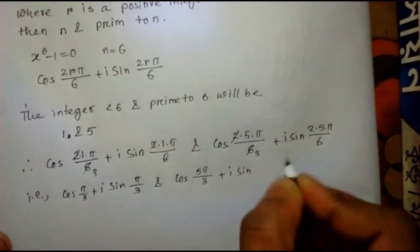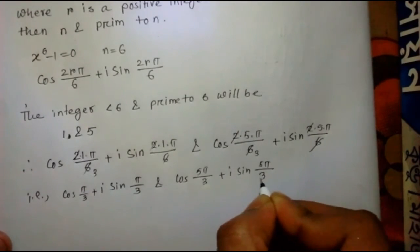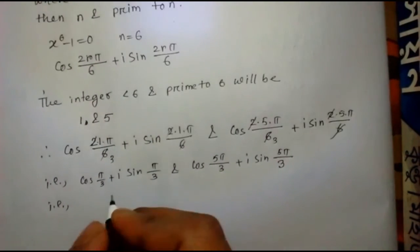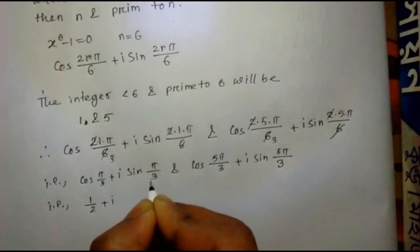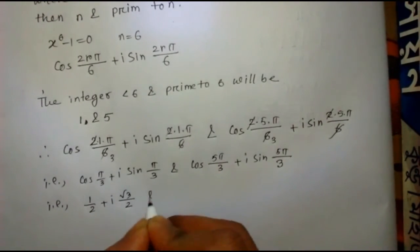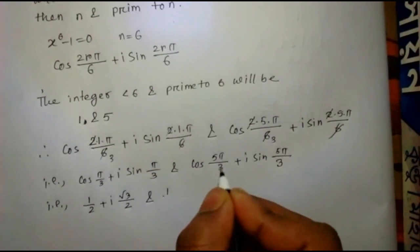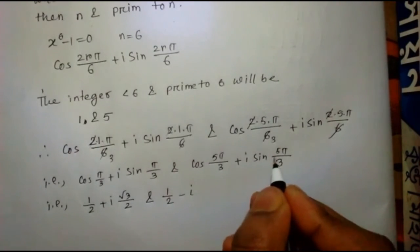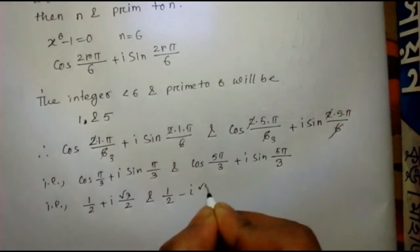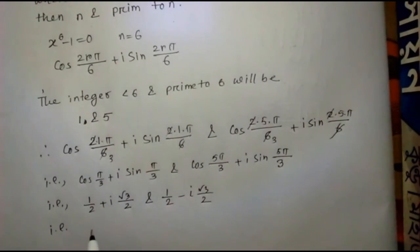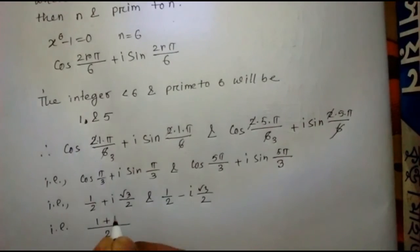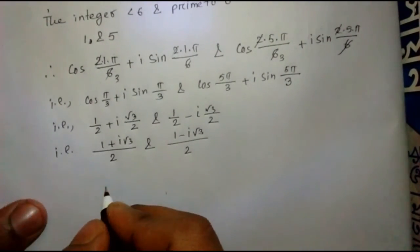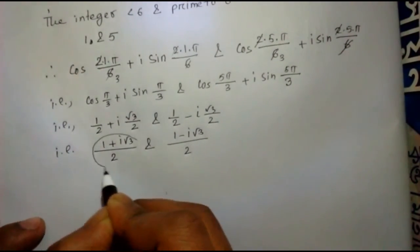Now, cos(5π/3) equals 1/2 and sin(5π/3) equals −√3/2, giving the root (1/2) − i(√3/2), which equals (1 − i√3)/2. And cos(5π/6) plus i·sin(5π/6) gives (1 + i√3)/2. Those are the two special roots of the given equation x to the power 6 minus 1 equals 0.